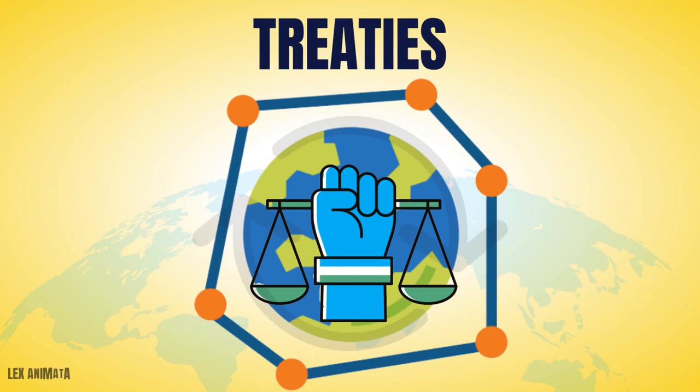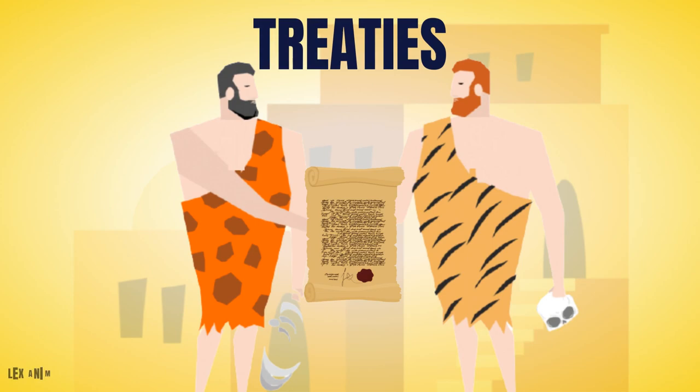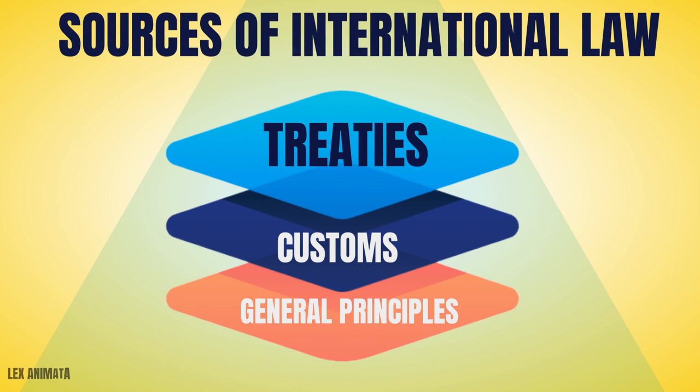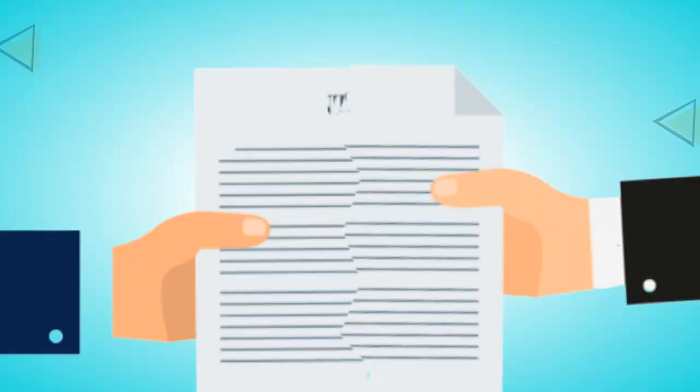Treaties are written agreements used by countries to bind themselves by creating mutual rights and obligations. They are one of the oldest international relations methods, and are considered a primary source of international law, also superior to customary rules, since they require explicit consent from states.